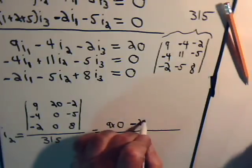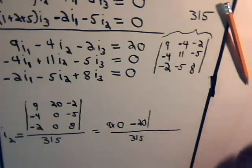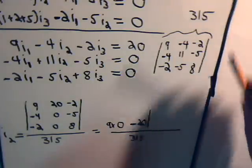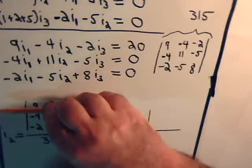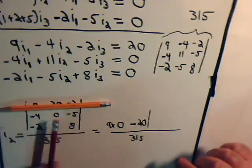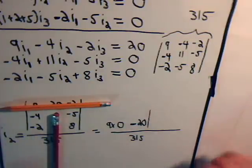Minus the next number, which is 20, and now we have this submatrix, or sub-determinant. Cover up the row, cover up the column. Negative 4, negative 2, minus 5, 8.